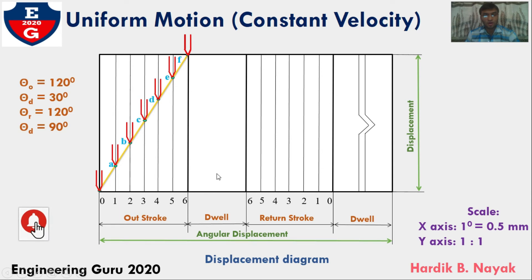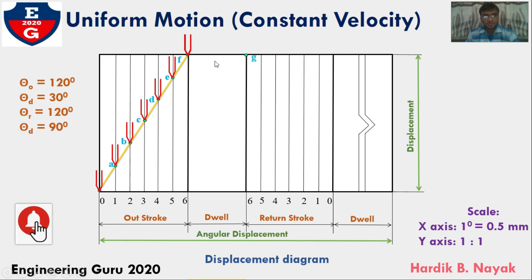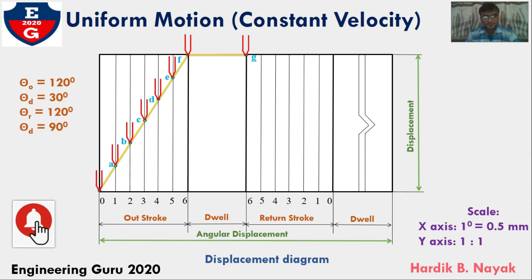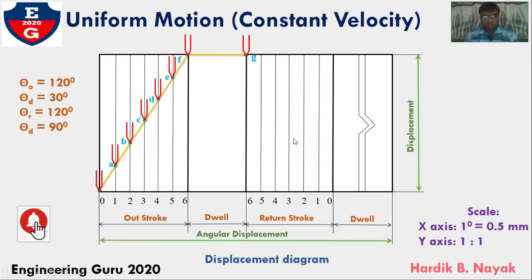Now next is dwell. During dwell the follower remains at the same height. Draw a dark line — this indicates dwell. So this is our dwell line, and the follower moves along this path.